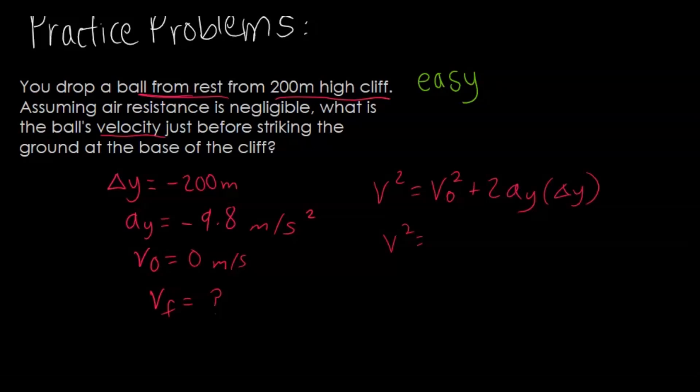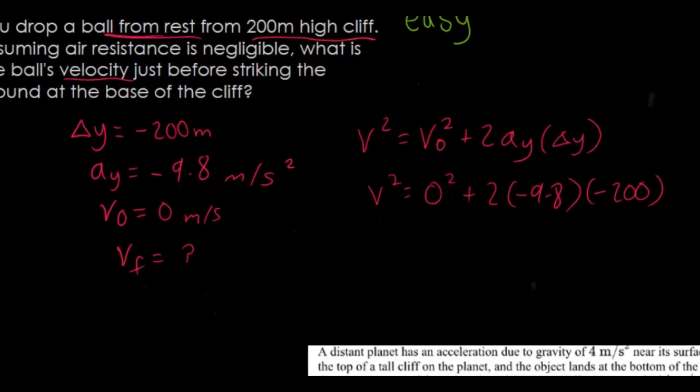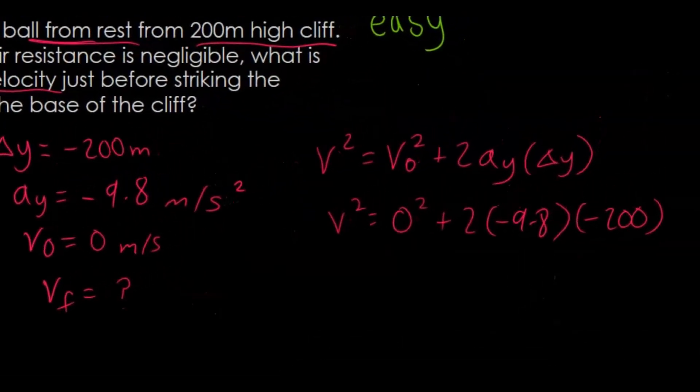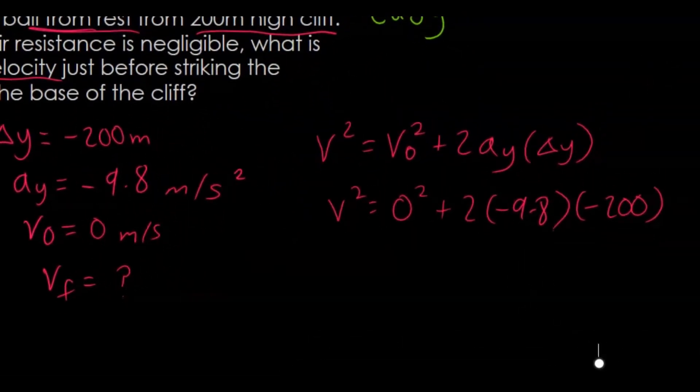Our v squared is just going to be unknown for now. Our initial velocity squared is just zero, so zero squared is zero. Plus two times the negative 9.8, that's our acceleration, and then our y displacement which is negative 200. We have two negative numbers here and that's going to give us a positive. So we're going to get v squared equals...